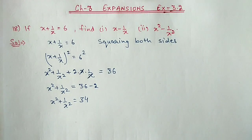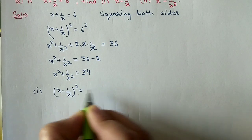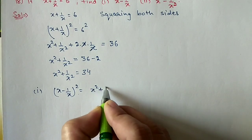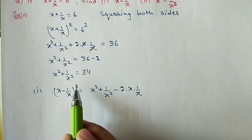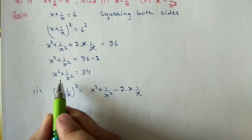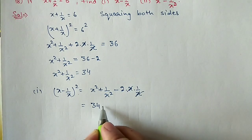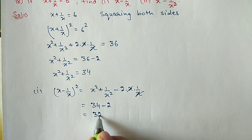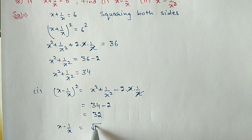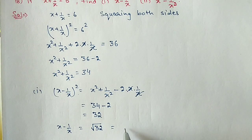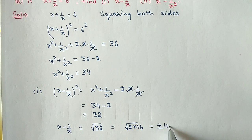Now we will find out the first part, x minus 1 by x. So x minus 1 by x whole square is equal to x square plus 1 by x square minus 2 into x into 1 by x, using the a minus b whole square formula. This value we already have, so we substitute: 34, and x and x cancel out leaving 2, so minus 2 gives 32. Therefore x minus 1 by x whole square equals 32, so x minus 1 by x equals root of 32, which is root of 2 into 16, so the answer is plus minus 4 root 2.